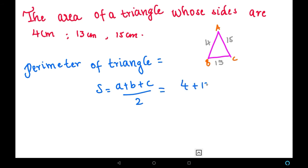Let us solve it. That is 4 plus 13 plus 15 by 2, that is nothing but 32 by 2, that is nothing but 16 centimeters. So we have found the perimeter of this triangle.